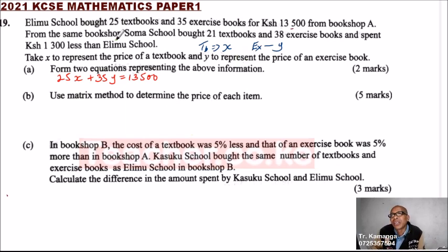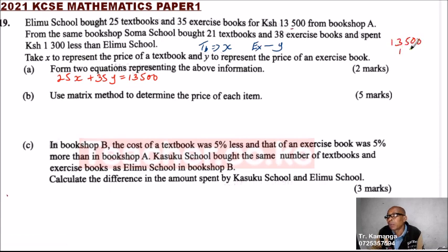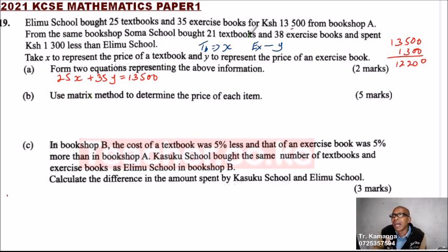For Summer school, they spent 13,000 shillings. So we subtract: 13,500 minus 1,300 gives us 12,200. They bought 21 textbooks, so it is 21X plus 38Y — that is 38 exercise books — equals 12,200.